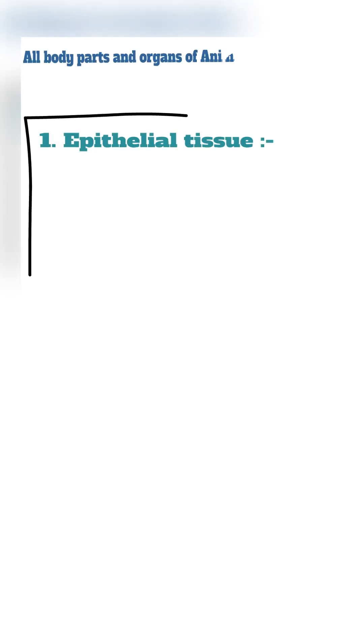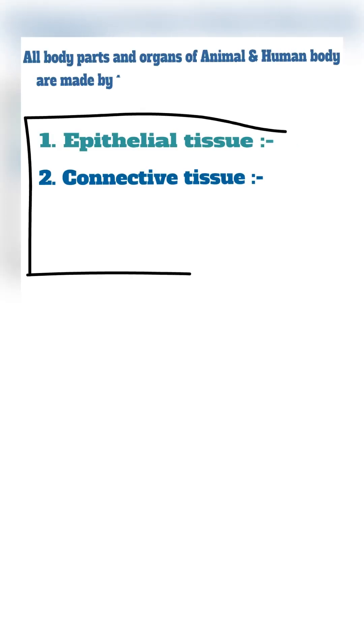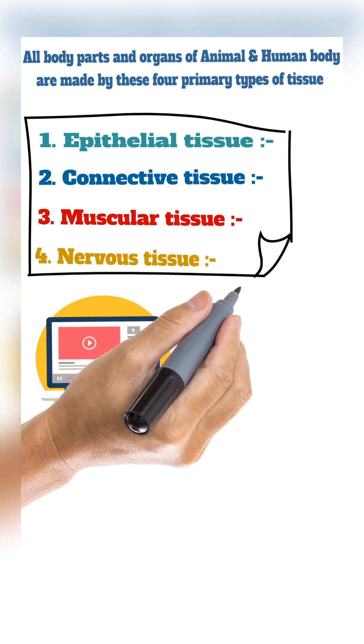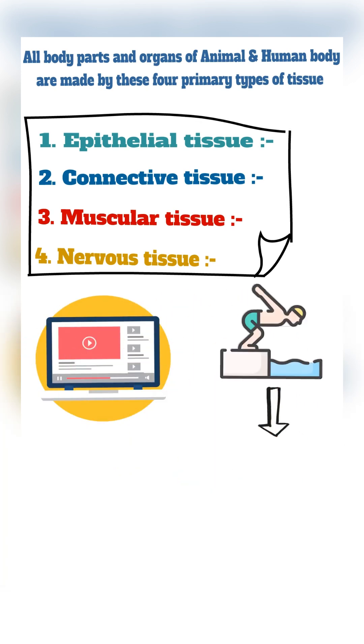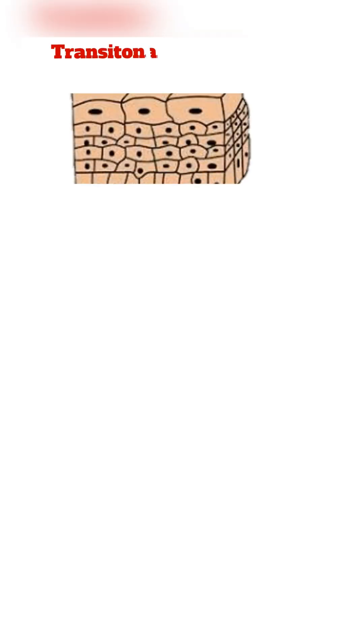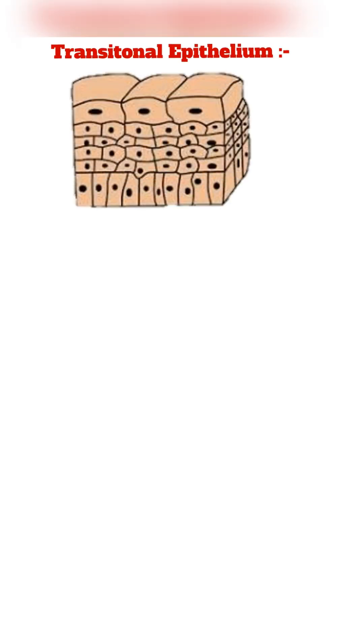All body parts and organs of animal and human are made by these four primary types of tissue. In this short, we really dive into the details of transitional epithelium — the transitional epithelium.